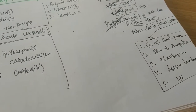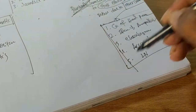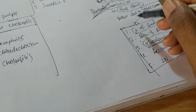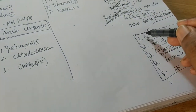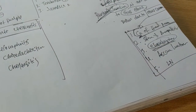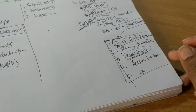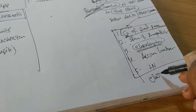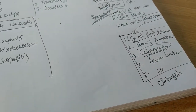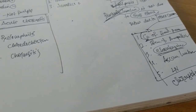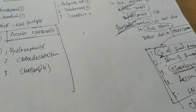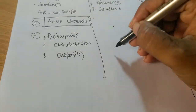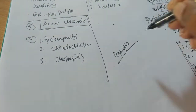So a painless jaundice with palpable non-tender gallbladder should not be due to gallstone — rather it should be malignancy, most importantly carcinoma of the head of the pancreas and cholangiocarcinoma. Courvoisier's Law is intended to indicate carcinoma of the head of the pancreas and cholangiocarcinoma, and may also be due to stenosis of the ampulla of Vater, Ascaris lumbricoides, or cholangitis — where inflammation of the common bile duct may lead to stenosis and result in a palpable non-tender gallbladder in a painless jaundice patient.